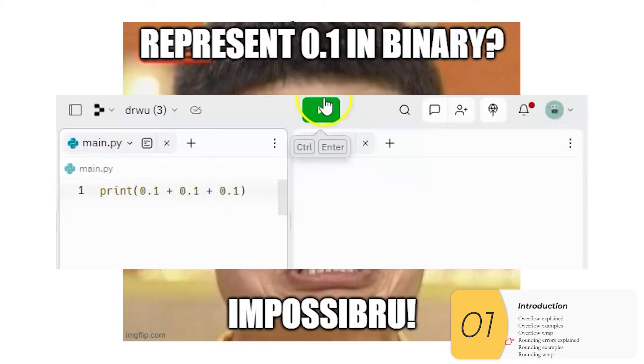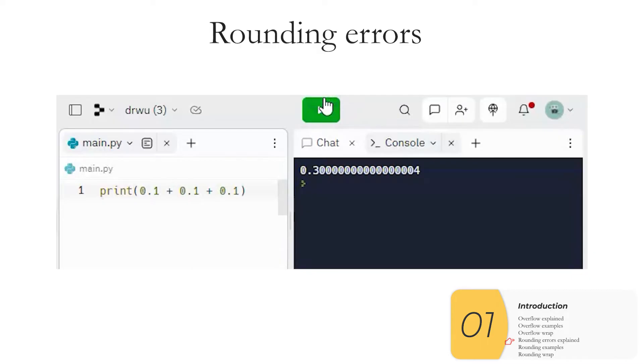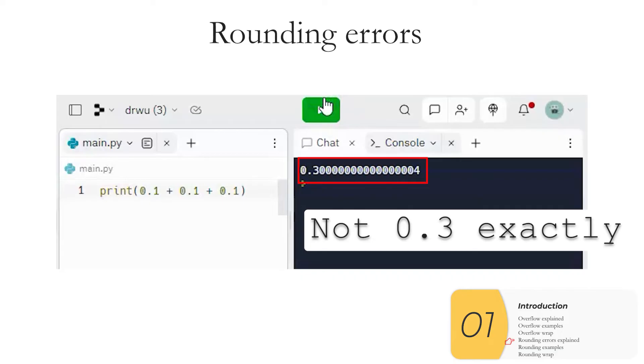The answer is there's no way to represent 0.1 in binary exactly. It's not possible. And I can do this little Python demonstration here where I'm adding 0.1 and 0.1 and 0.1. And when I print that out, it's 0.3 with a lot of zeros, but a little bit extra at the end. And this illustrates that when I'm doing 0.1 in binary, it's not exactly 0.1. It's just slightly off.